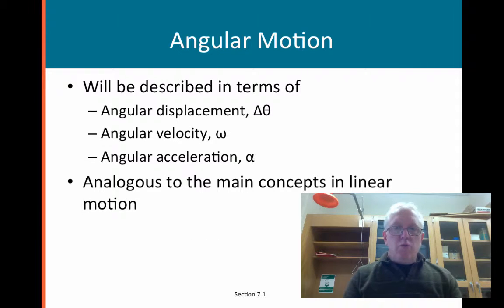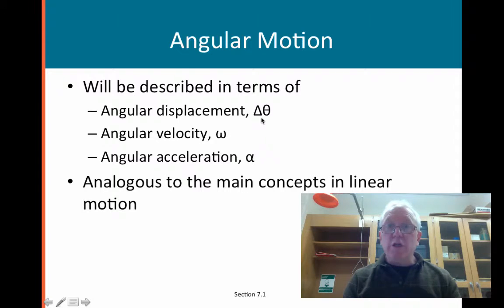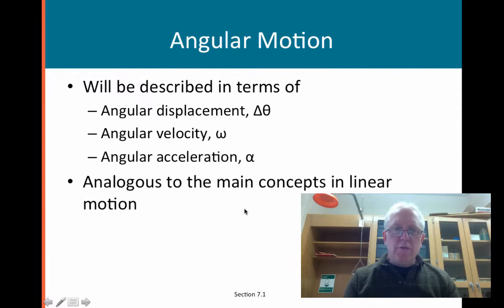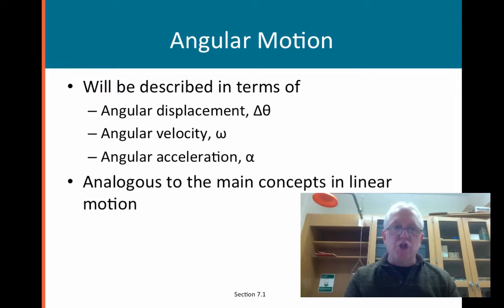We will talk about angular displacement with rotational motion rather than a physical linear displacement, and the term for that will be theta. We will also take a look at angular velocity — and there's the symbol for that — and angular acceleration, which is alpha. So terms that we're familiar with from linear motion, we're now going to be applying to rotational motion.